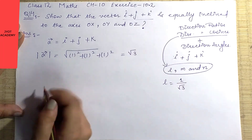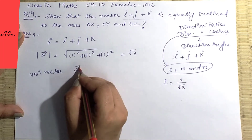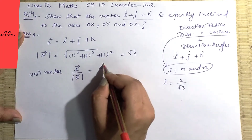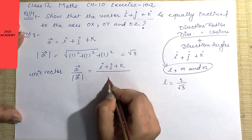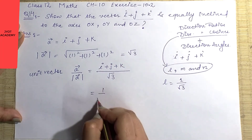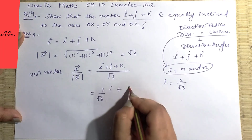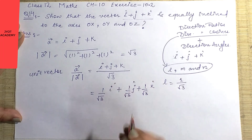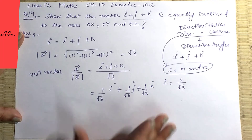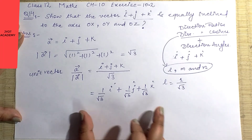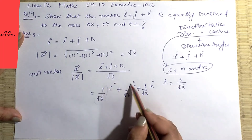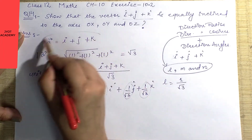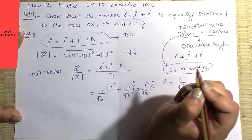The given vector is i + j + k. Its magnitude is √3. So the unit vector = (1/√3) i + (1/√3) j + (1/√3) k. When you have this unit vector, you can see that the values are exactly l, m, n — the direction cosines of this vector.